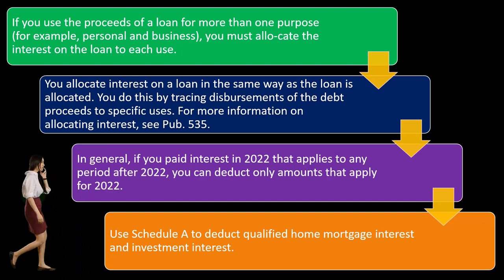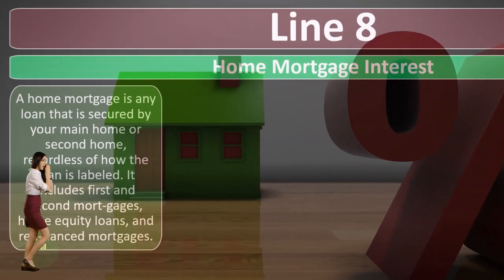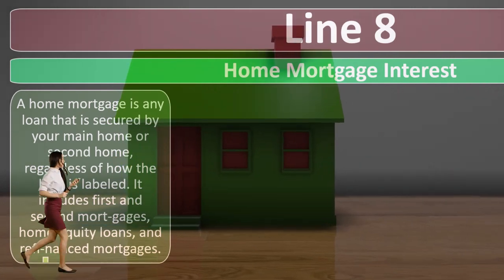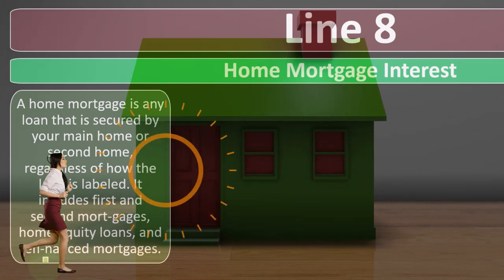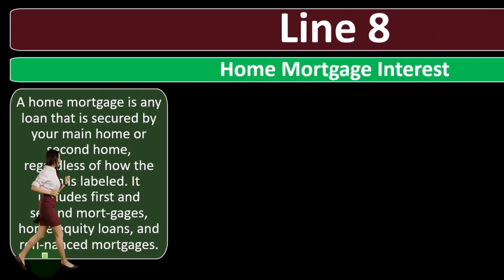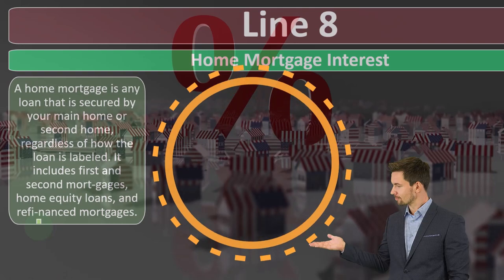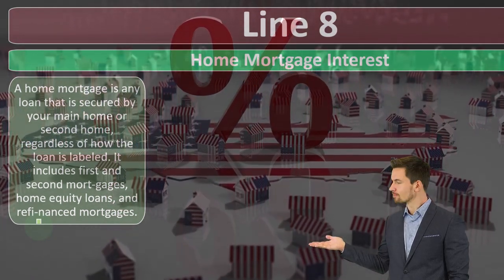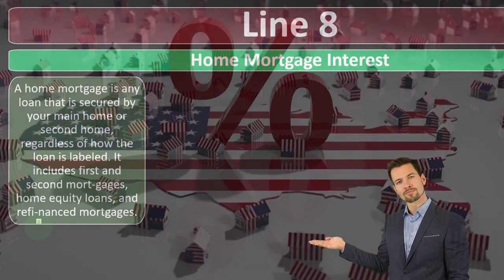Use Schedule A to deduct qualified home mortgage interest and investment interest. Line 8 — home mortgage interest. A home mortgage is any loan that is secured by your main home or second home, regardless of how the loan is labeled. It includes first and second mortgages, home equity loans, and refinanced mortgages. When you purchase a home, you typically take out a loan using the home as collateral — so if you default, the bank has recourse to it.